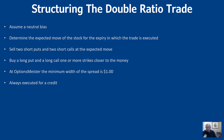Let's talk about how to structure the double ratio trade. We assume a neutral bias, on both the call side and put side, not unlike a strangle. We want to determine the expected move for the expiry. In most cases, we're going to be selling two short puts and two short calls at the expected move, then buying one long put and one long call one or more strikes closer to the money.